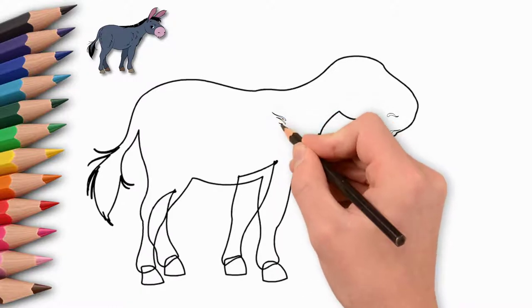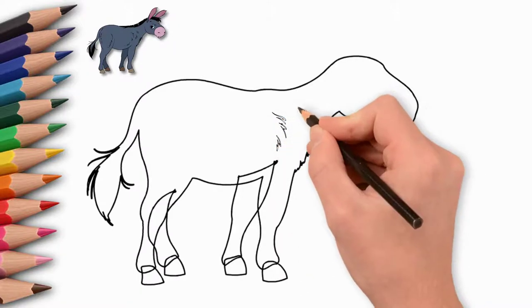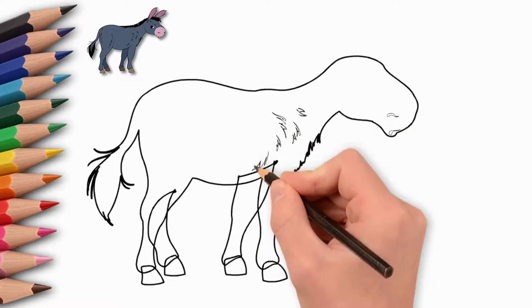Let's draw hair on a trunk. Let's draw some details on the body. Then our donkey will look more realistic.